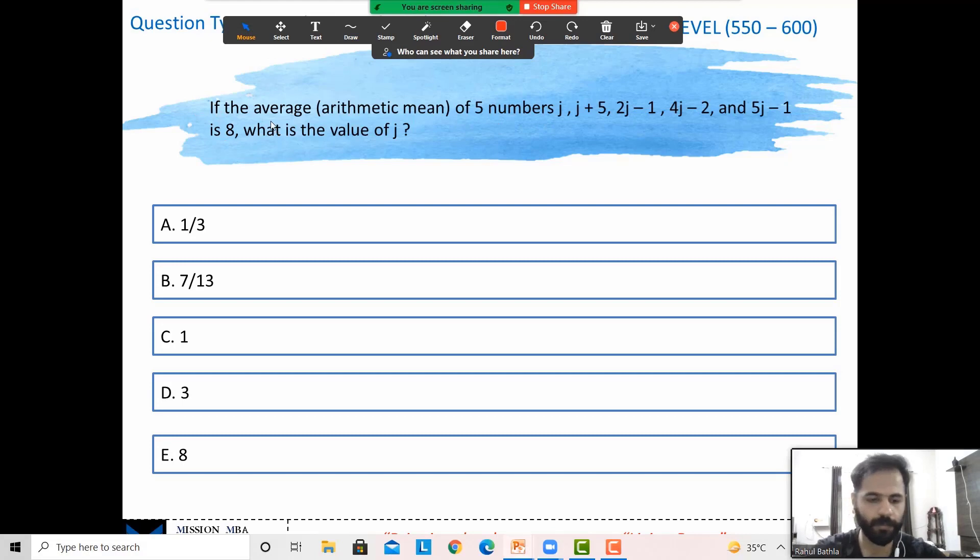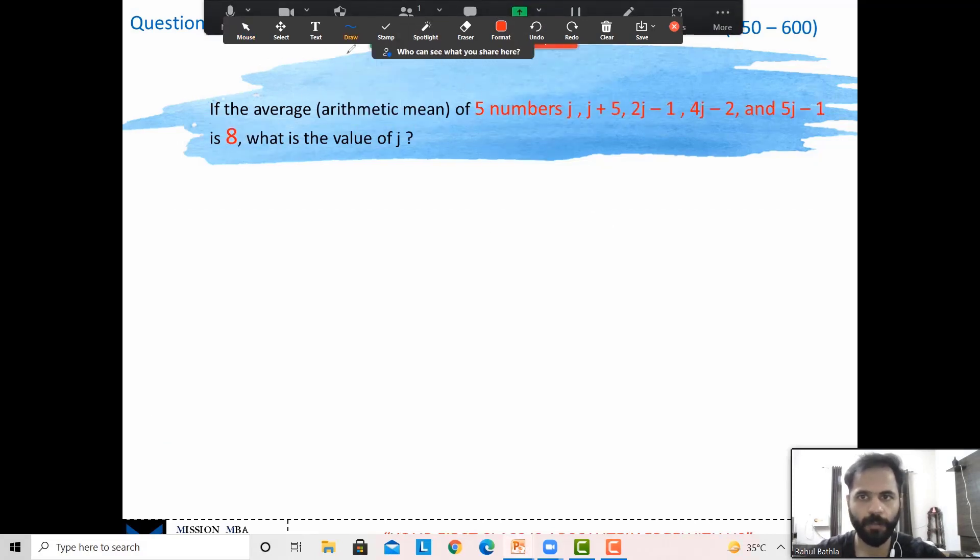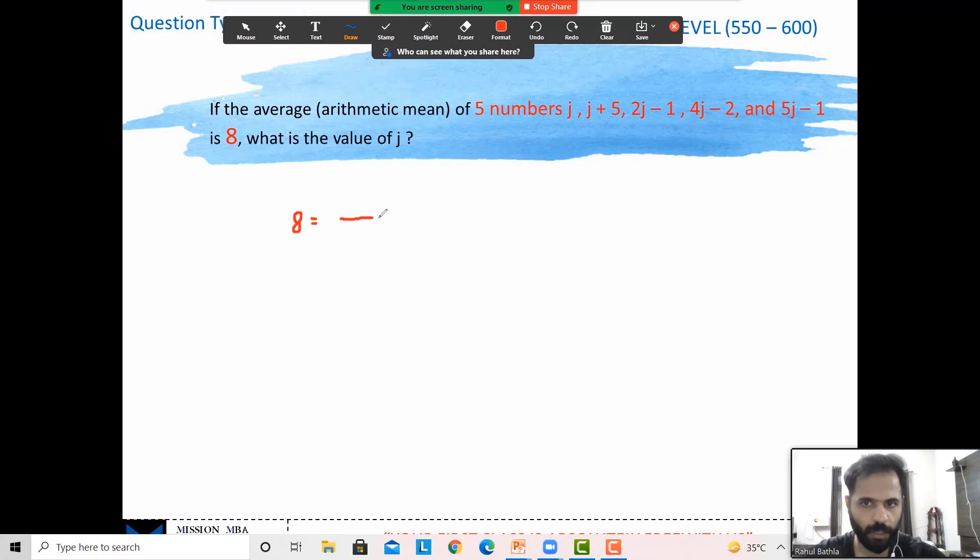Now we know that the mean, which is 8 in this case, is the sum of the numbers divided by the number of numbers. The number of numbers is clearly 5, given to us. The sum of the numbers will come in the form of j.